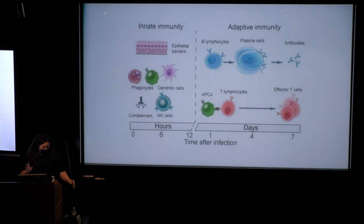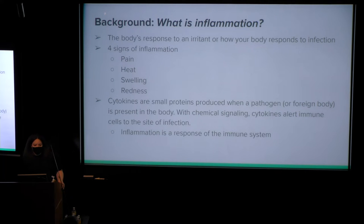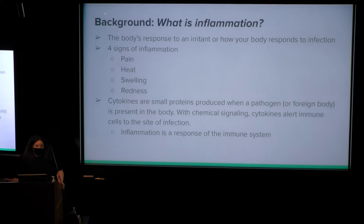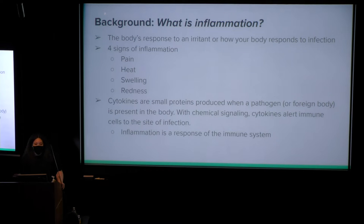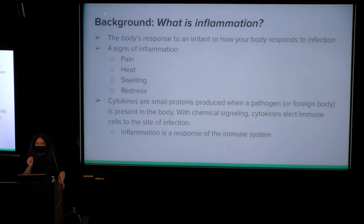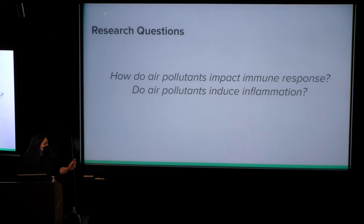More background: what is inflammation? It's your body's response to an irritant — how your body responds to infection. It has four main signs: pain, heat, swelling, and redness. Cytokines are small proteins produced when a pathogen is present in the body. Through chemical signaling, cytokines alert immune cells to the site of infection; those are specifically called chemokines. Inflammation is essentially a response of the immune system.